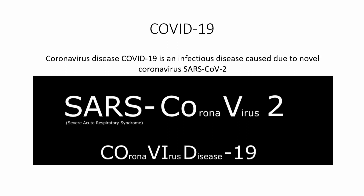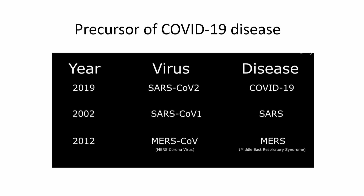COVID-19 stands for Coronavirus Disease 19. The first two letters stand for corona, the next two for virus, D stands for disease, and since it originated in 2019, it has been named COVID-19. This is not the first viral disease — the closest precursor was first found in 2002, known as SARS-CoV-1, causing SARS. The second closest virus is MERS-CoV, which first appeared in 2012, causing MERS — Middle East Respiratory Syndrome.